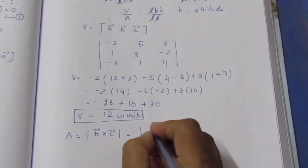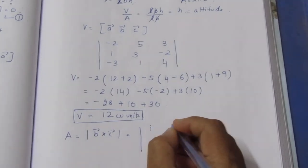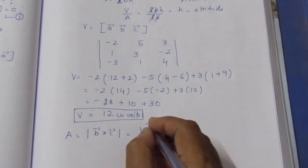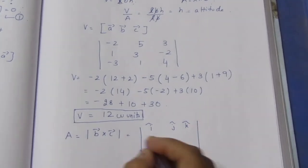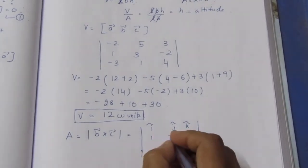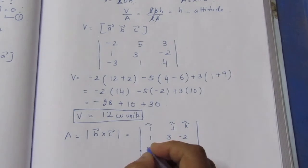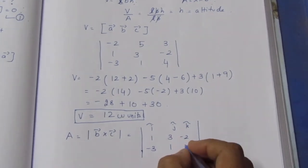Setting up the cross product with i, j, k in the first row. B vector (1, 3, -2) in the second row, C vector (-3, 1, 4) in the third row.